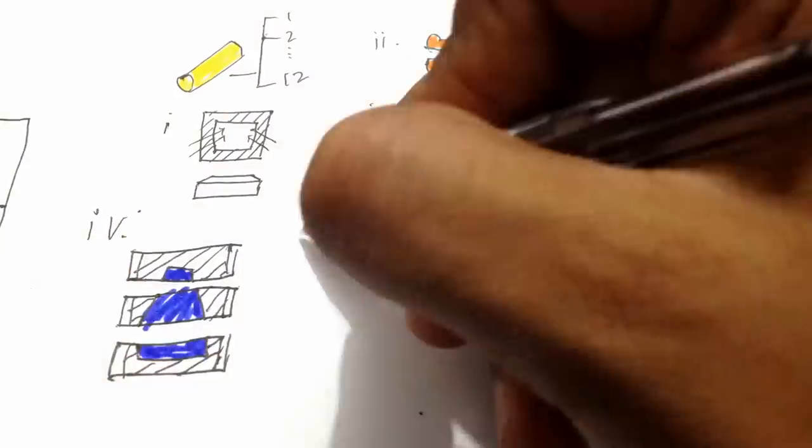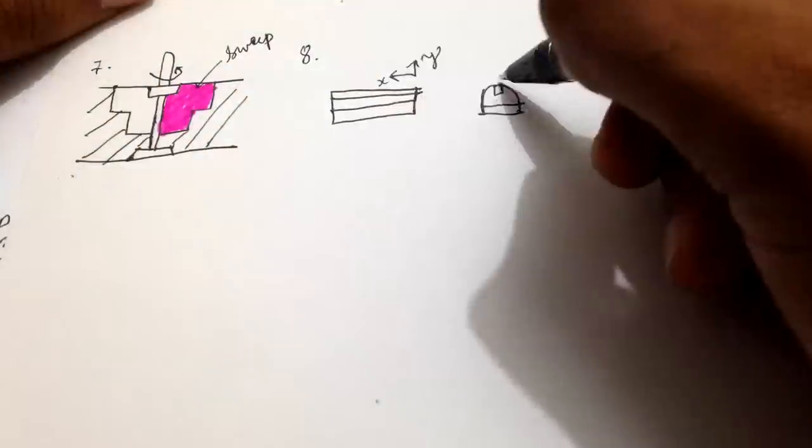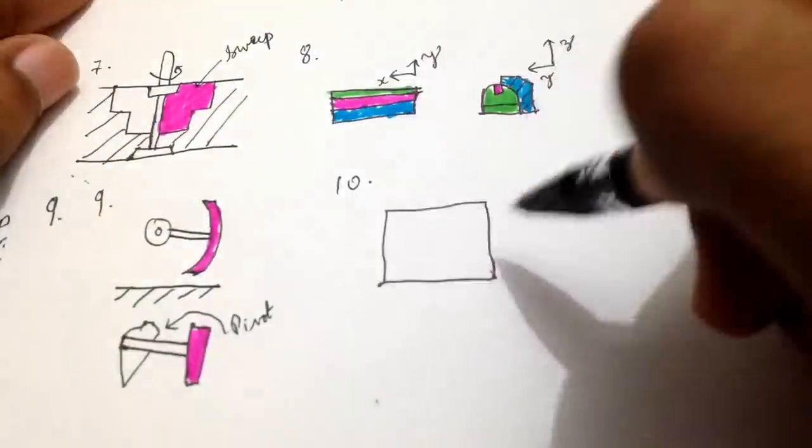The various types of patterns which are commonly used are single or solid pattern, two piece or split pattern, loose piece pattern, open drag pattern, gate pattern, match plate pattern, sweep pattern, skeleton pattern, segmental pattern, flow board pattern, and bagged up pattern.